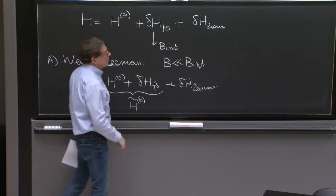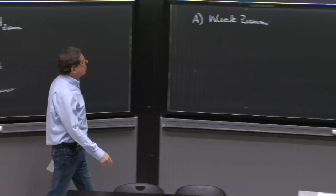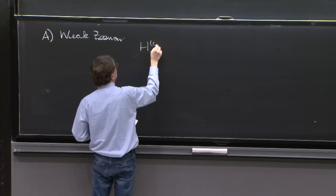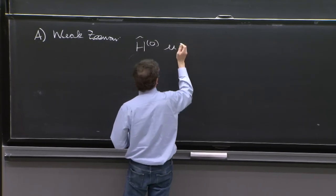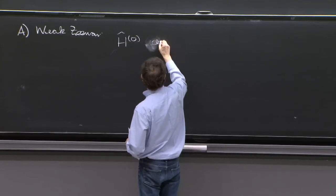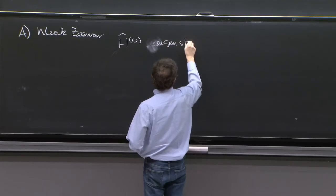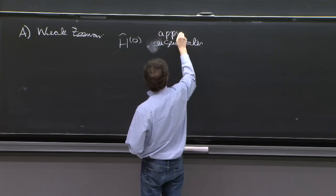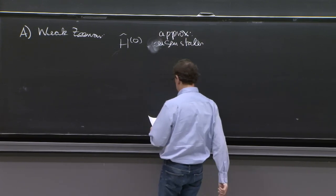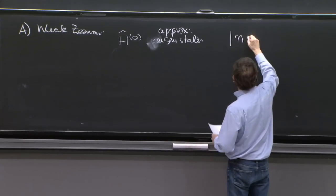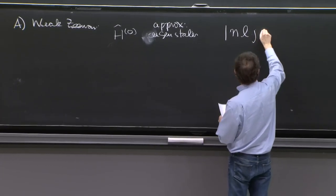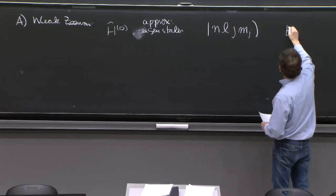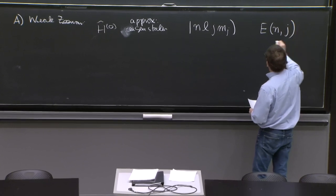We discovered that, and we know those are the coupled basis states. And the states of H0 tilde, eigenstates, or eigenstates, the approximate eigenstates are the states N, L, J, Mj. And the energies were energies that depended on N and J.